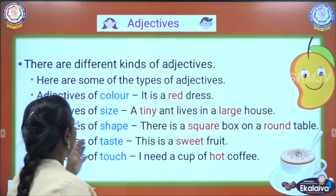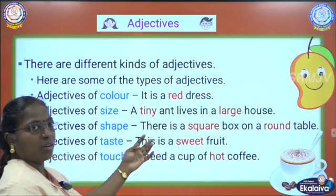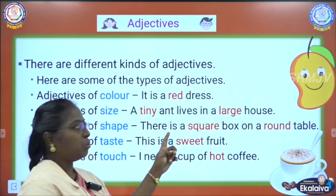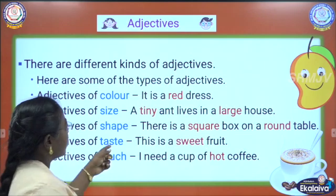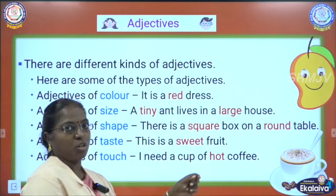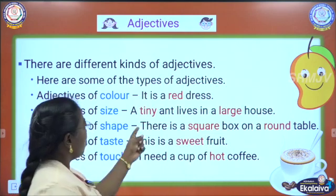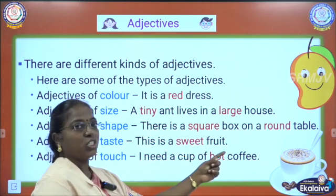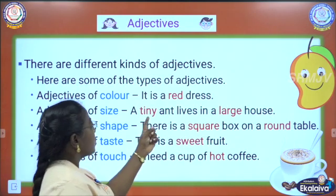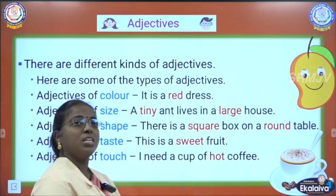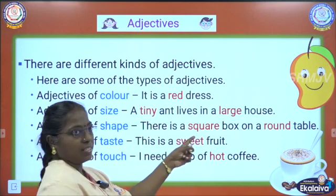Here are some of the types of adjectives. Adjectives of color — color means red — whether the dress is red or green, we are describing about the dress, so red is an adjective. Then adjectives of size — a tiny ant lives in a large house — we are describing about the ant, whether the ant is tiny or small. So tiny is an adjective. And large house — the house is large — so large is an adjective. We are describing the size of the ant and size of the house. So this is adjective of size.